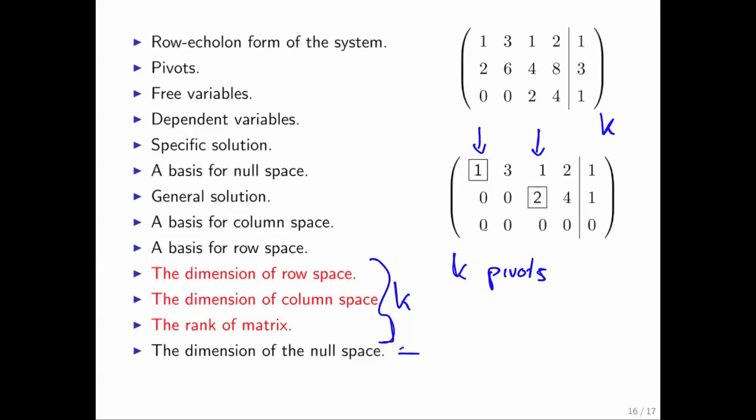The dimension of the null space is equal to the number of columns minus the number of pivots. This is always equal to n, the number of columns in the matrix, minus k, the number of pivots. In this particular case, that also equals 2, but that's by coincidence.